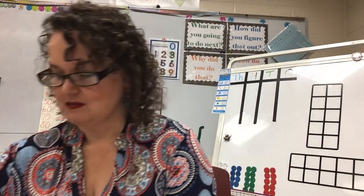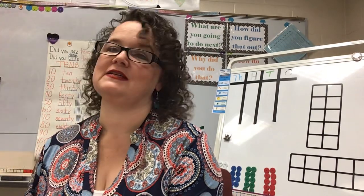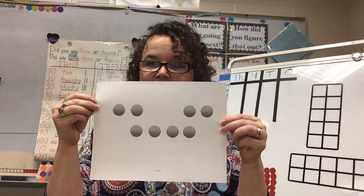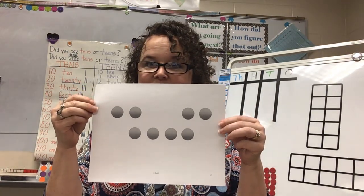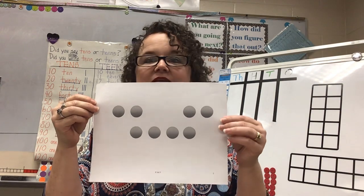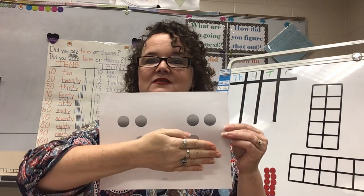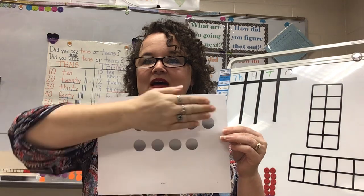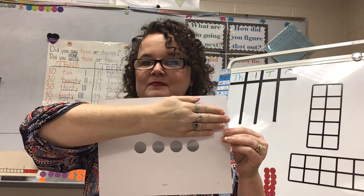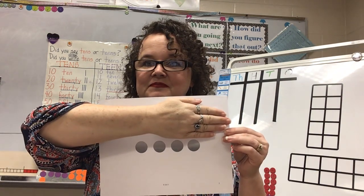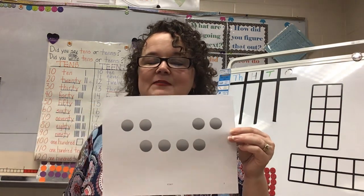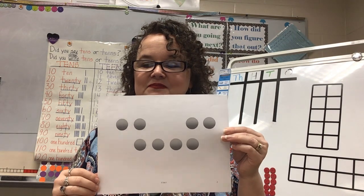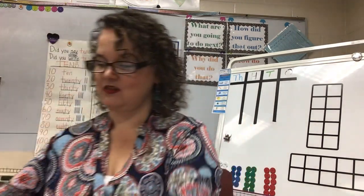So we're going to be doing some quick subitizing. Can you tell how many there are? Let's look at it in parts. How many is on the top? How many is on the bottom? How many does that make all together?